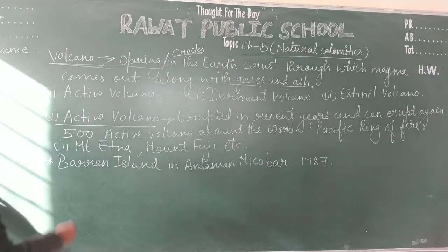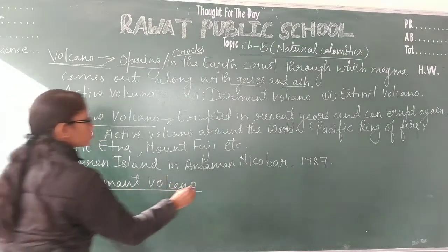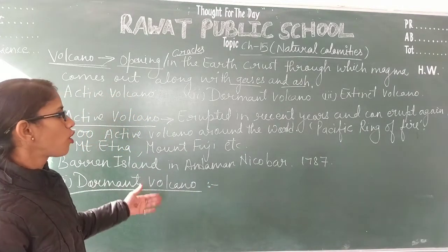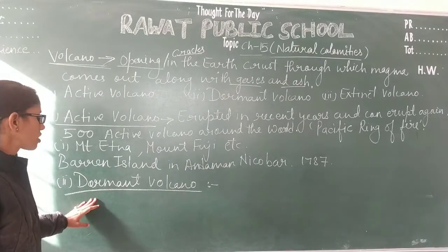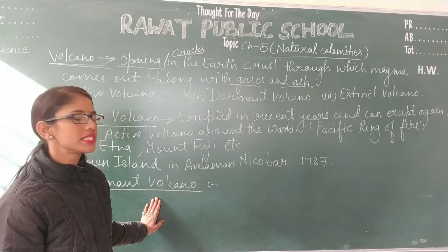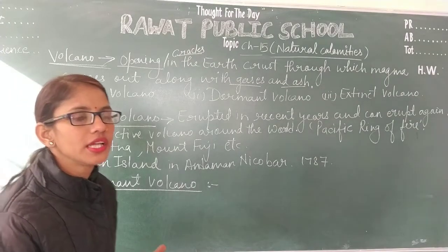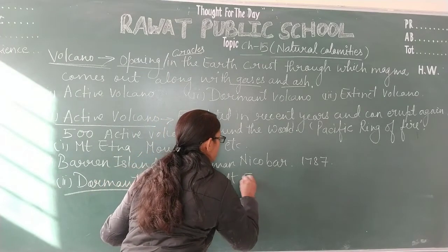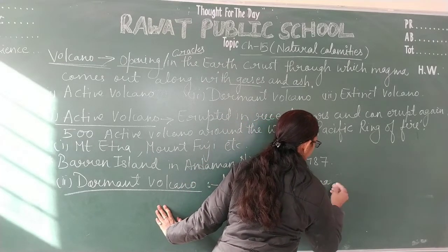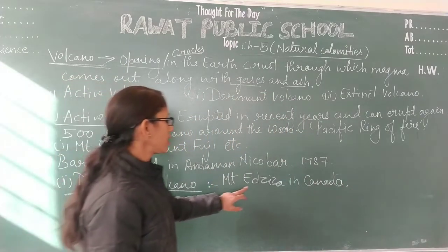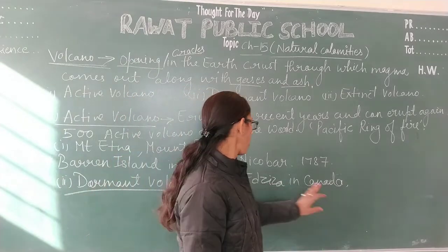The second type of volcano is the dormant volcano. Dormant volcanoes are those that have not erupted in recent years but can erupt in the coming future. Examples of dormant volcanoes include Mount Kilimanjaro and Mount Ajjeeja in Canada.